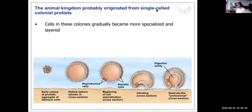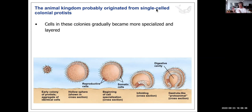How did the animal kingdom originate? Looking around today, you can practically see the progression. There are unicellular organisms — diatoms, dinoflagellates — and colonies like Volvox. Colonies would have evolved before multicellular organisms, with cells becoming so codependent that they became one organism whose individual cells can't exist on their own.